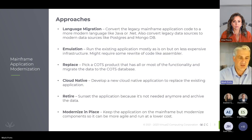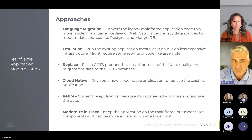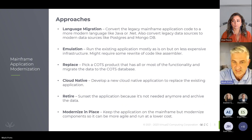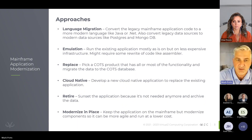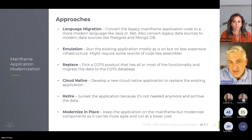When talking to our clients about their modernization journey, there are really six approaches. The first one is around language migration. You've heard of companies probably like Astadia, TSRI, CloudFrame, and others that are converting legacy code like COBOL to a more modern language after converting off the mainframe, whether that be in a private or public cloud — most commonly with the hyperscalers like AWS, Azure, or Google.